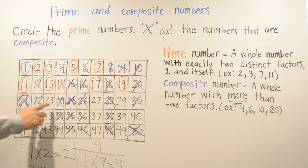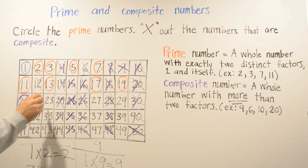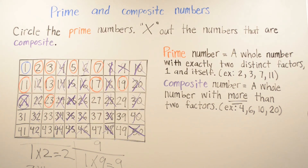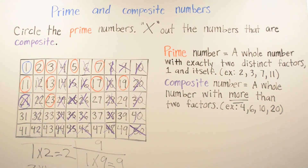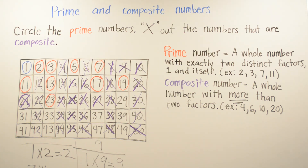So we continue. Number 23 is going to be a prime number because it's 1 and itself. Then we look at 27, and 27 is going to be a composite number — I'm going to X it out. It's composite because it has more than two factors: you have 1 times 27, and also 9 times 3, which equals 27.